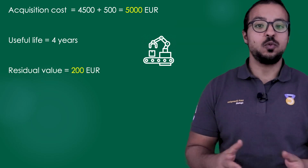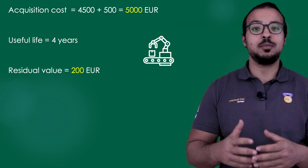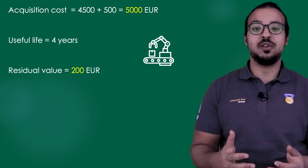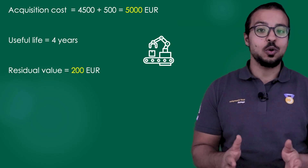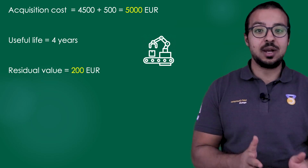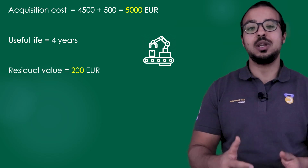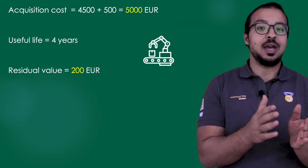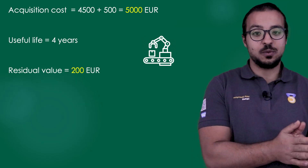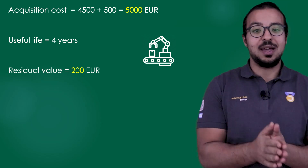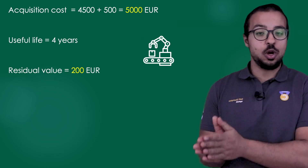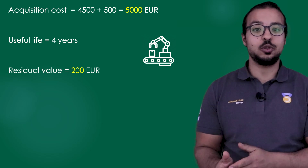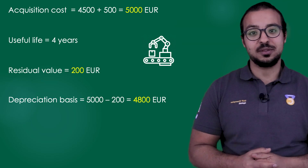After the useful life, we expect that this asset can be sold as scrap or for spare parts for a value of 200 euros. This is called the residual value — it is the value that will remain from the asset at the end of its useful life. So the acquisition and production cost is 5,000 euros and the residual value is 200 euros, giving us a depreciation base of 4,800 euros.